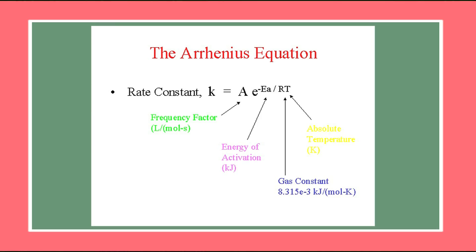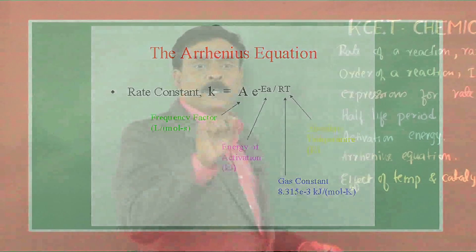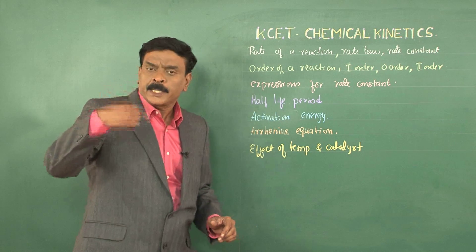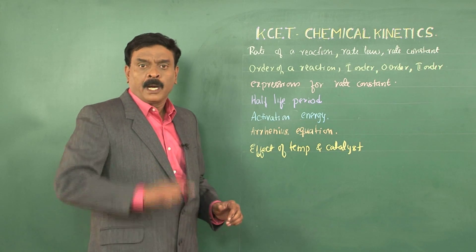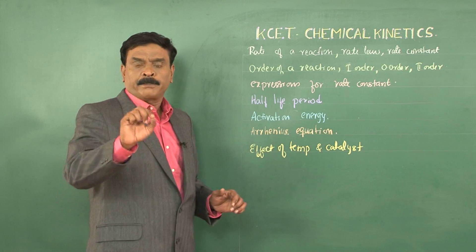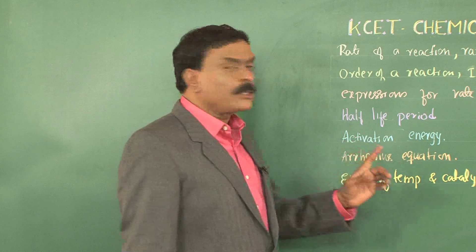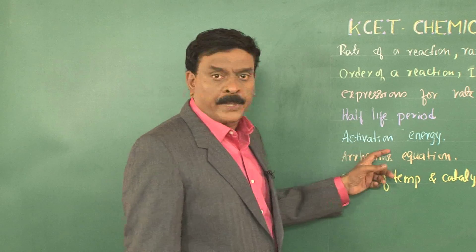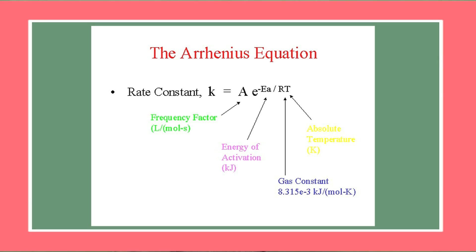Coming to Arrhenius equation: we know the rate of a reaction depends on the rate constant values. Lower the rate constant values, slower is the reaction; higher the rate constant value, faster is the reaction under given conditions of temperature and concentration. There has to be a relation between the rate constant and energy of activation, and this relation is given by the Arrhenius equation.